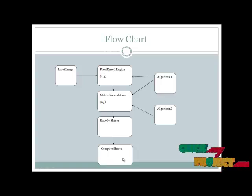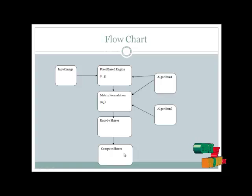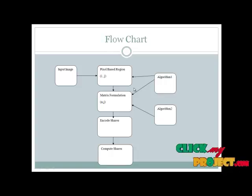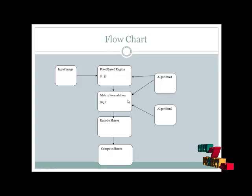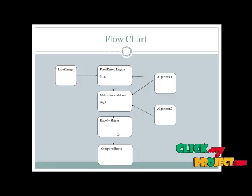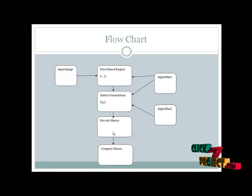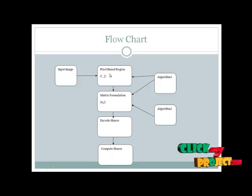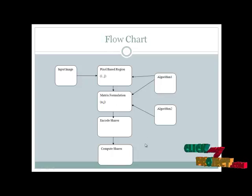The sharing images and encoding images are computed for the share — Share 1 and Share 2 — encoding images sharing to get the computed share images. The shared computed images are generated to display the original images. In Algorithm 1 and Algorithm 2 steps, pixel regions and matrix formation are derived, both helping to get the encoding share, which generates the black and white pixel regions.